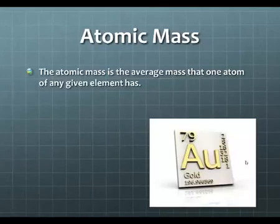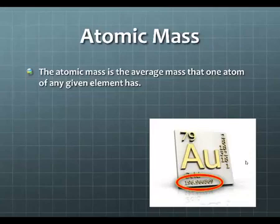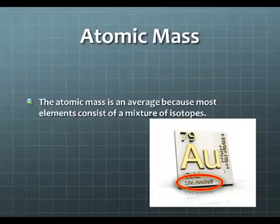Atomic mass is the average mass that one atom of any given element has. So the atomic mass is usually found at the bottom. So for gold, it's 196.96. And that information tells us the total number of protons and neutrons that gold has. So it's the sum of the protons and the neutrons. If I know that the atomic number is 79, that tells me there are 79 protons. If I know that the atomic mass is 196, and the atomic mass is the sum of the number of protons and the number of neutrons, I can take 196 and I can subtract 79 from it to figure out the number of neutrons. The atomic mass is an average because most elements consist of a mixture of isotopes.